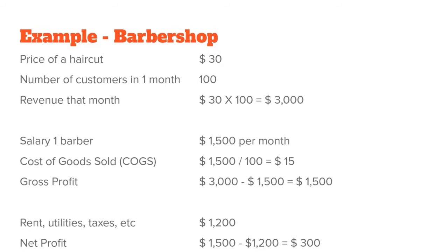From the gross profit, you still have to deduct other expenses. For the barbershop, all other costs total $1,200. We can then calculate net profit: $1,500 gross profit minus $1,200 for rent, utilities, taxes, and other costs, leaving us with $300 at the end of the month. This $300 is the profit the business owner has made. The owner can decide to reinvest it, increase expenses, or take it as dividends.